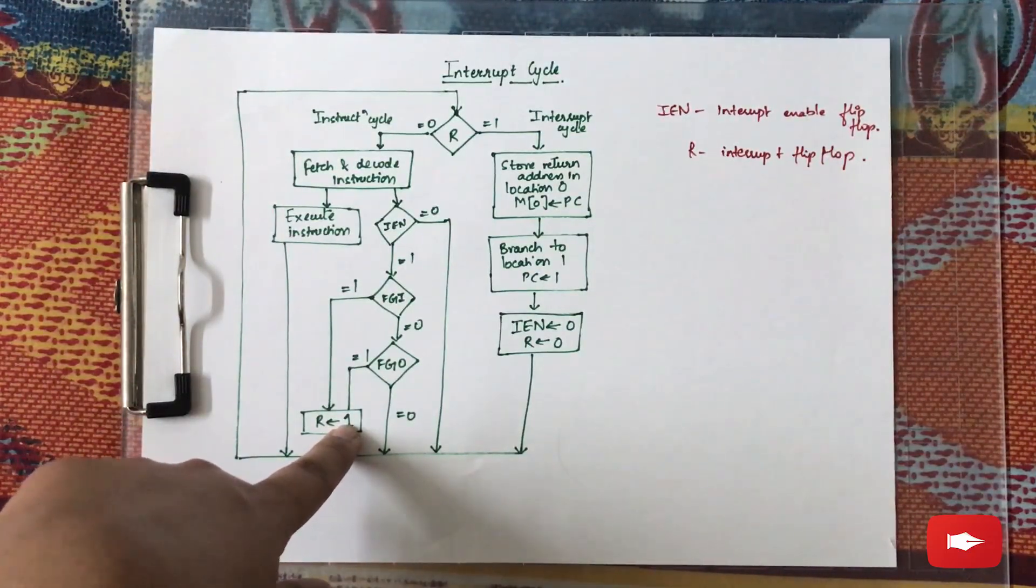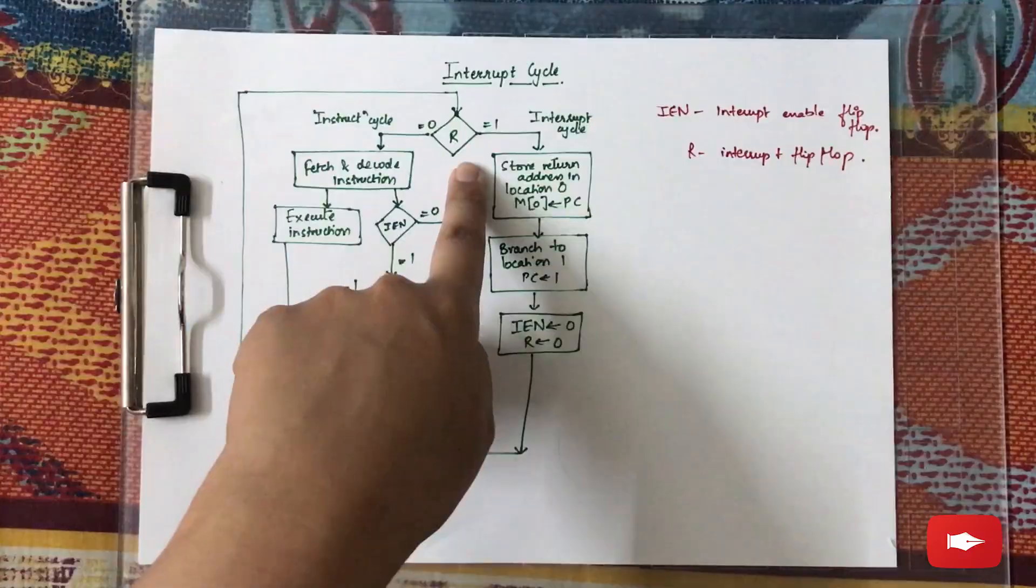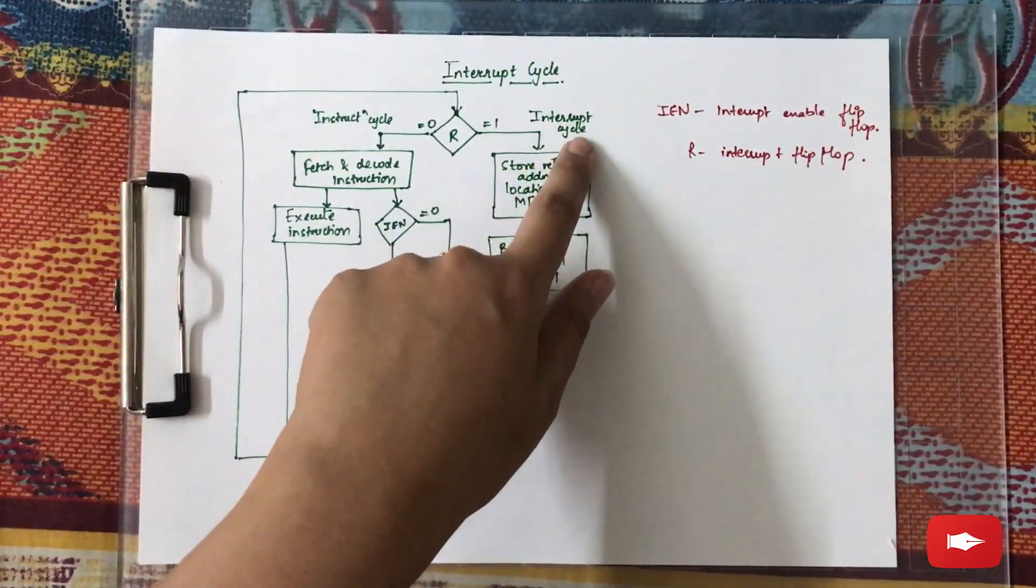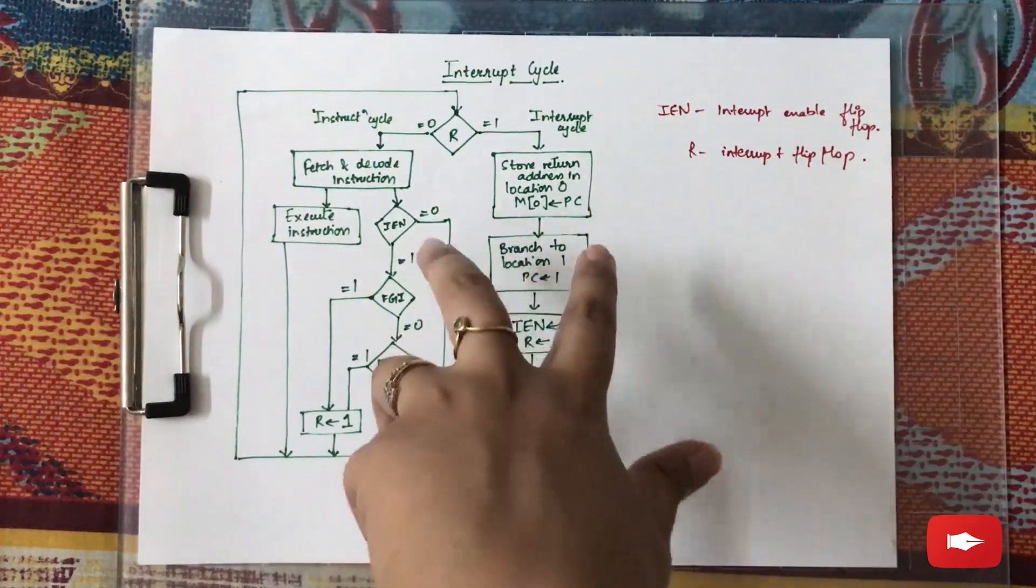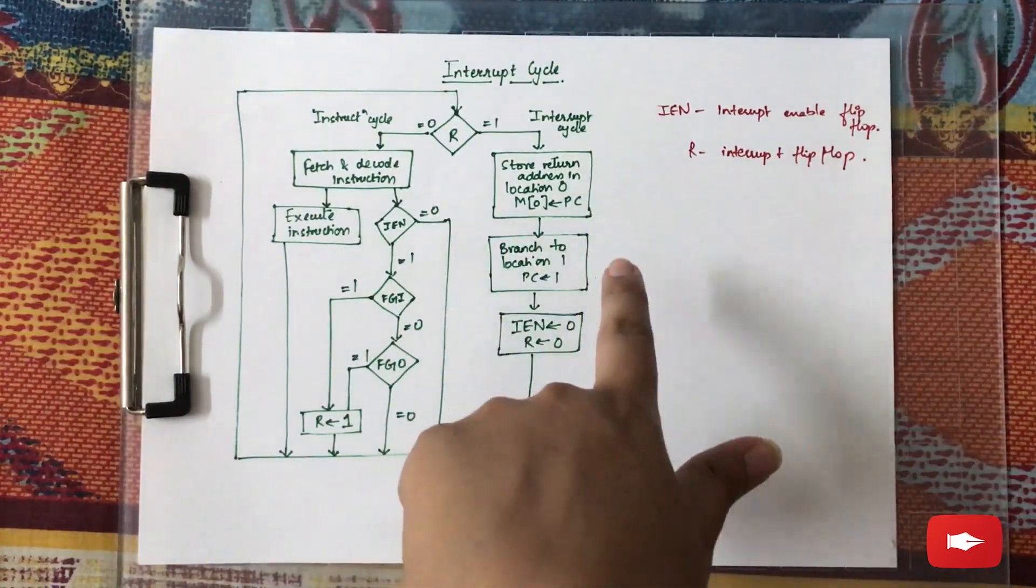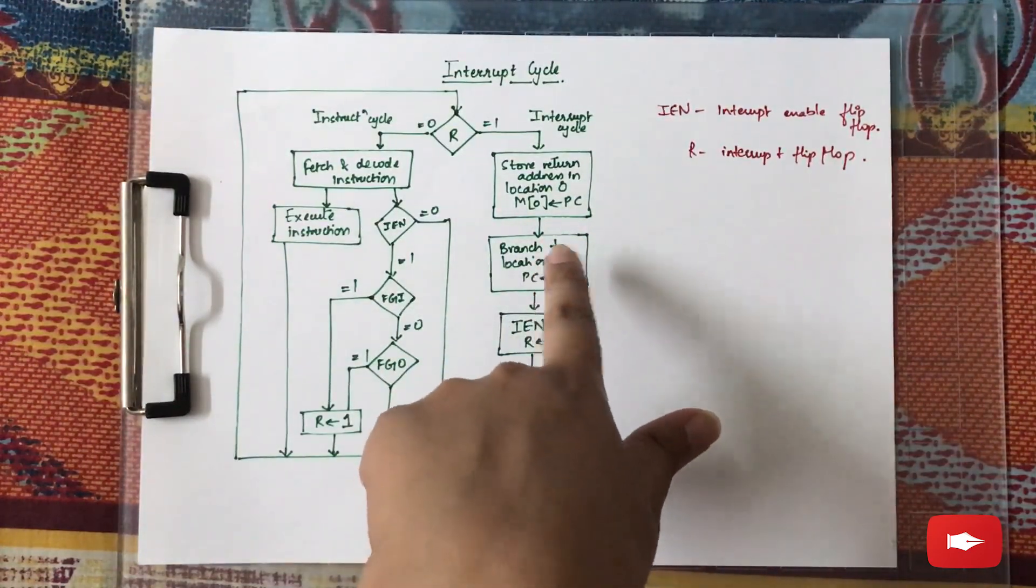Now when R is equal to one, we come to the interrupt cycle. Store return address in location zero. That means after the interrupt, we need to come back to the ongoing instruction. The address of that particular instruction is stored at this location.